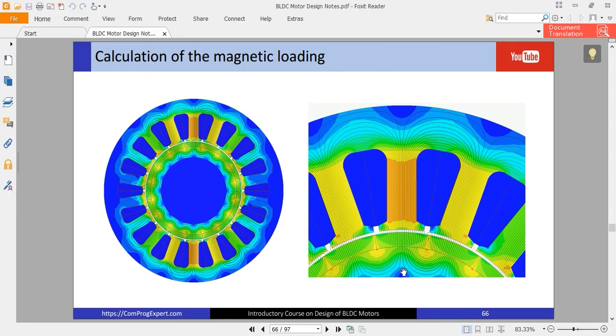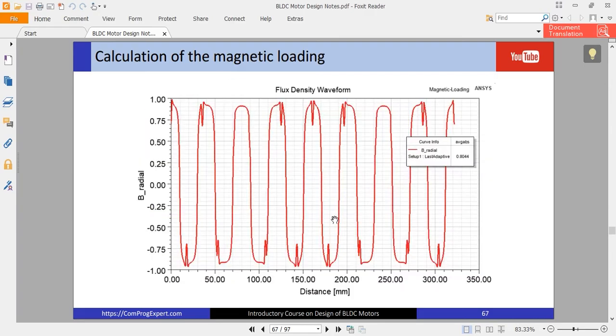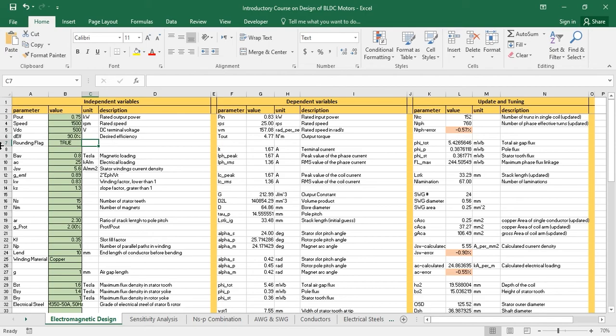So for design of BLDC motors, we need to do different finite element calculations. For example, the first one that is an important one is calculation of the magnetic loading. So we calculate the radial flux density in the middle of the air gap to calculate the magnetic loading. For example, here is 0.8, and we compare the value of magnetic loading with our analytic design to check if our assumption for magnetic loading at the beginning of the design is correct or not.